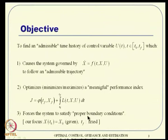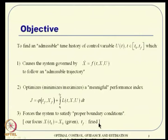The system also has to satisfy certain boundary conditions. The objective is to find a control trajectory in this domain such that it gives an admissible state solution, minimizes or maximizes a cost function, and satisfies certain initial as well as final boundary conditions. This falls in the framework of calculus of variations because this is a path-dependent optimization involving a dynamic system.